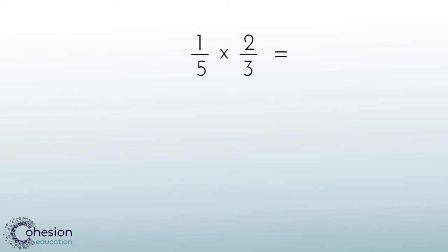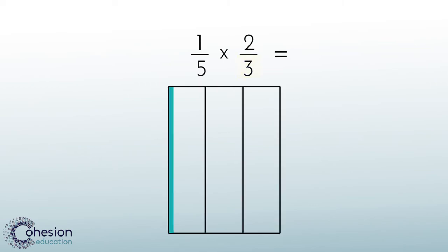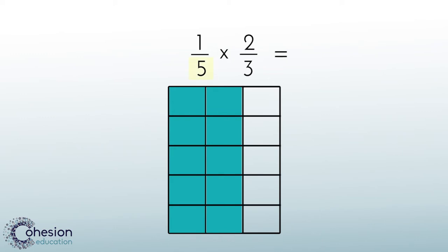To display two-thirds, we will make a rectangle with three columns and shade two of them. Now, on the same model, we want to show the first factor of one-fifth. To be able to tell the two apart, we will split the same model into five rows going the opposite direction as the columns.